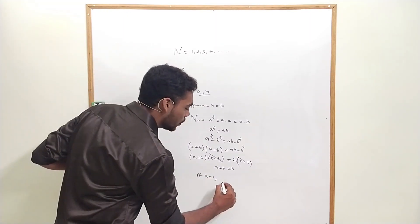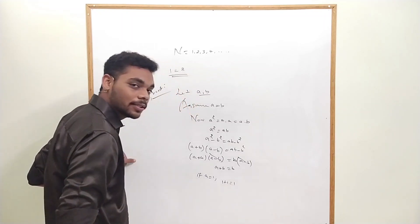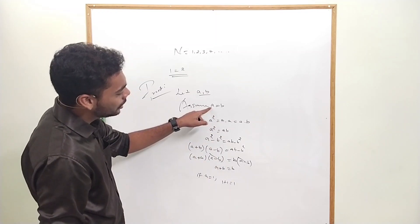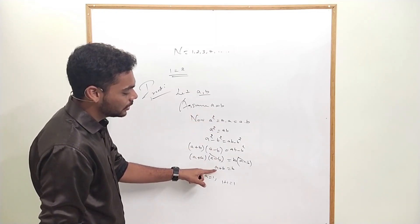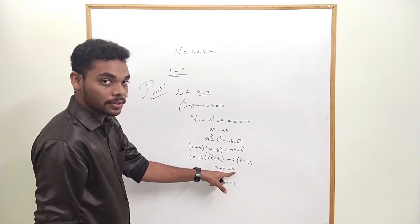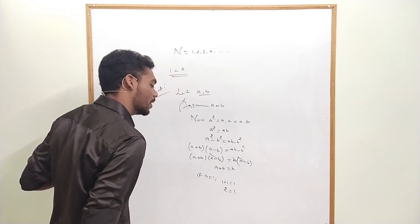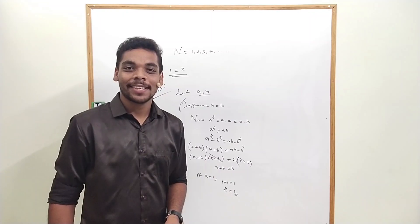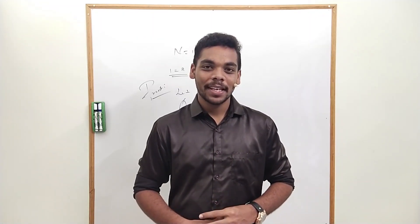So A plus B equals B. If we put A as one and B as one, then one plus one equals one — that is, 2 equals 1. We get the answer: 1 equals 2.